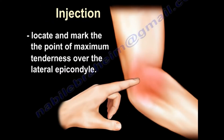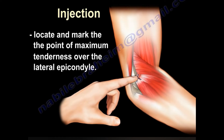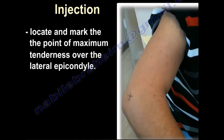How do you perform the injection? Locate and mark the point of maximum tenderness over the lateral epicondyle. You can see here the origin of the muscle right at the bone area, and here the site of injection is marked on a patient.